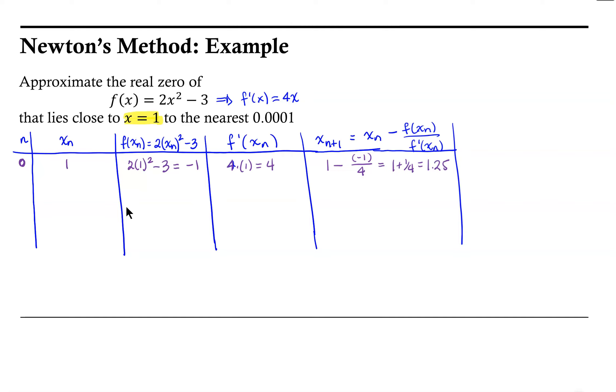So 1.25 is our next x value. So on our next iteration, we'll call that 1. This is x1, our first approximation. That was 1.25 for our first approximation to that zero.